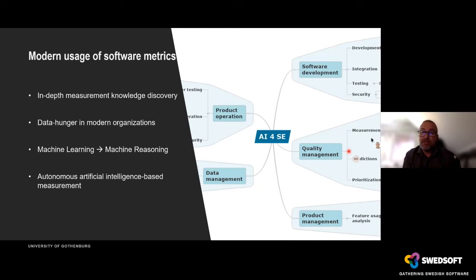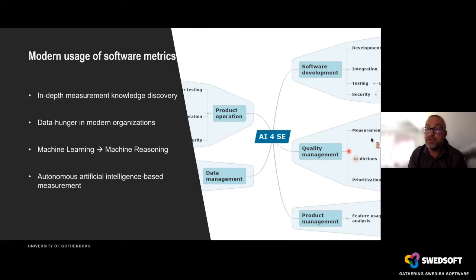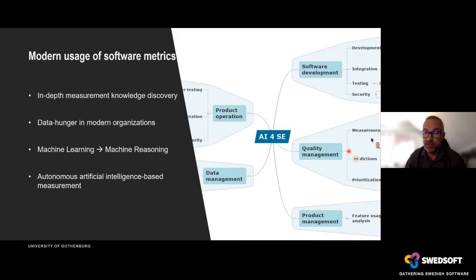The whole field of AI for software engineering has been around for a few years, covering improvement of software development, quality management, product management, product operations, and more. This has led us to work on what we call Artificial Intelligence Based Measurement — utilizing software measurements together with artificial intelligence to optimize software processes and provide feedback to organizations on how to use data in the best possible way.